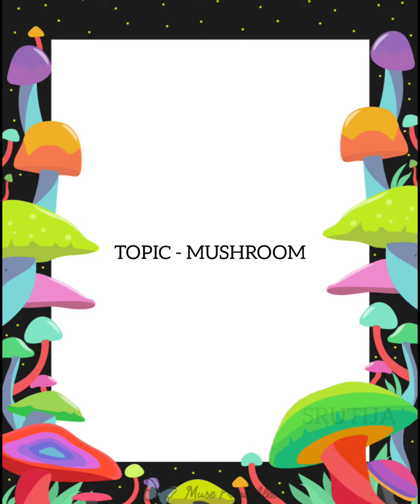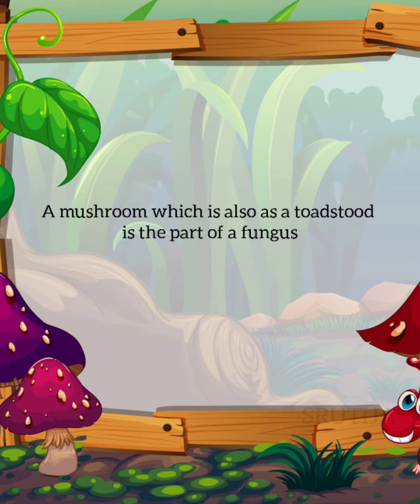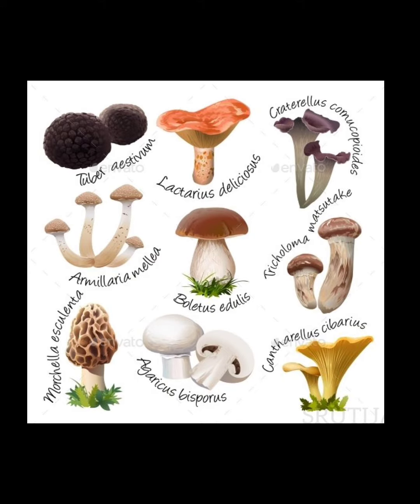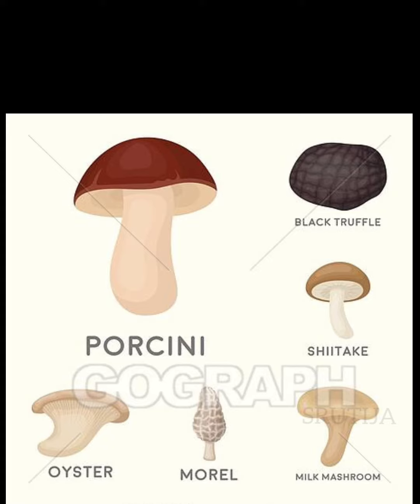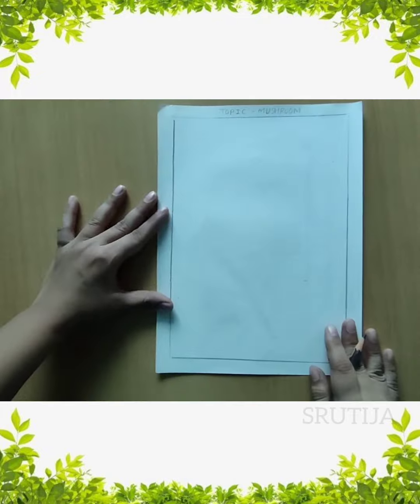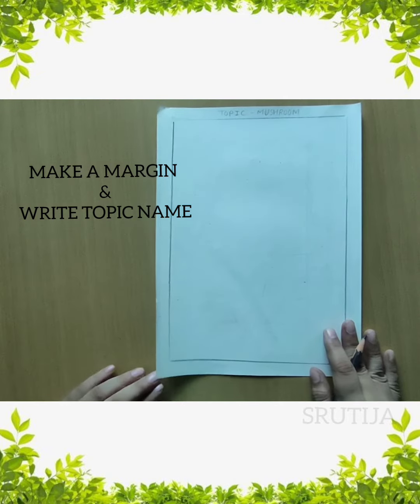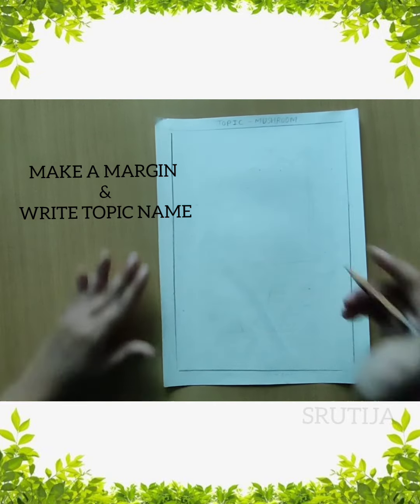Topic name is mushroom. A mushroom, which is also known as a toadstool, is a part of the fungus. There are various types of mushroom, but we will draw only one type here — that is porcini. How to draw this mushroom? Let's start the procedure.